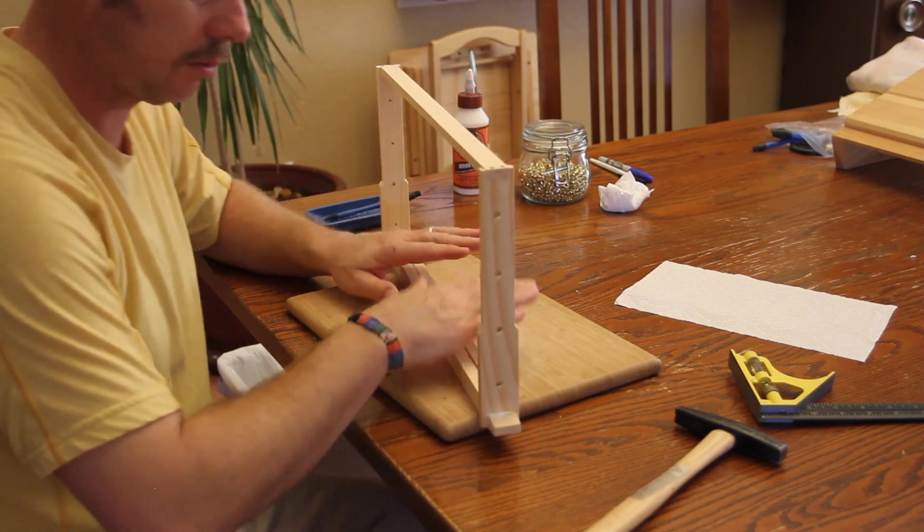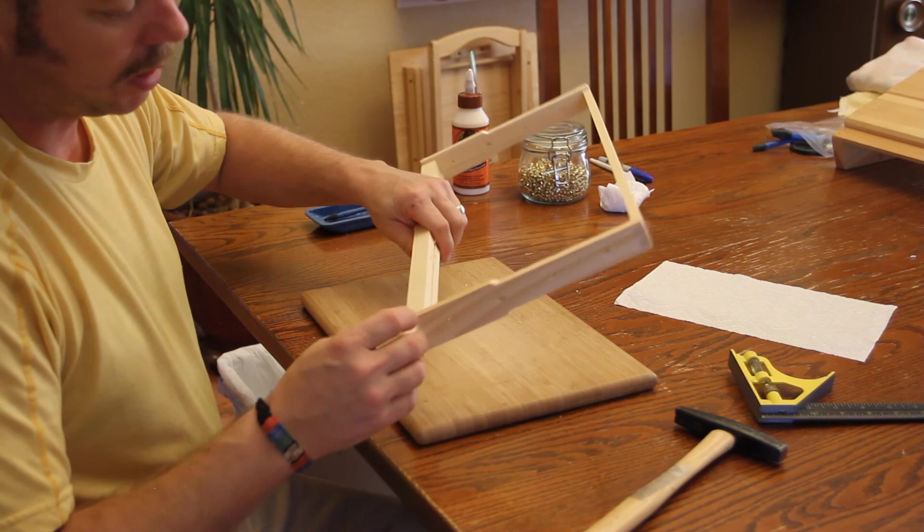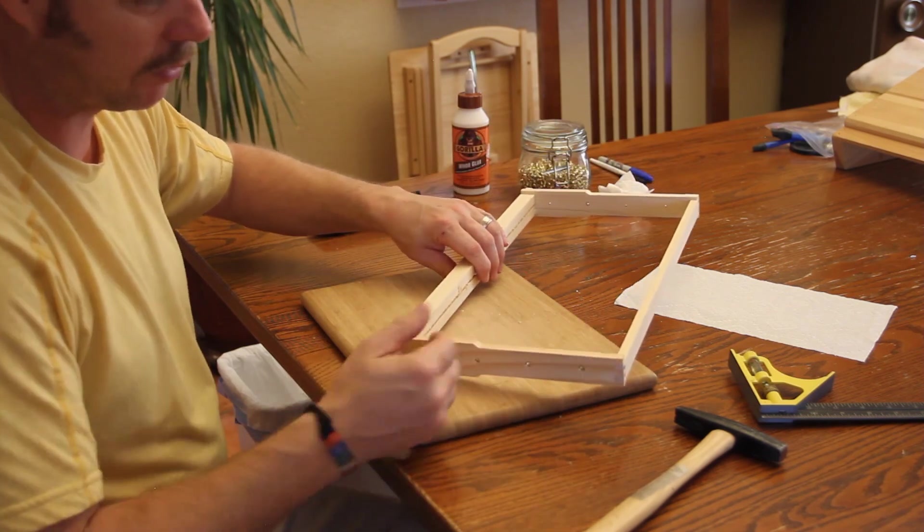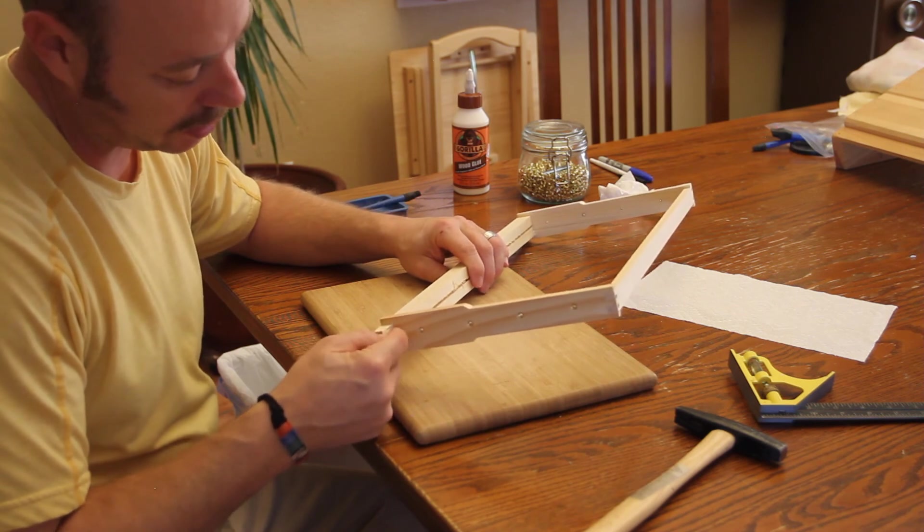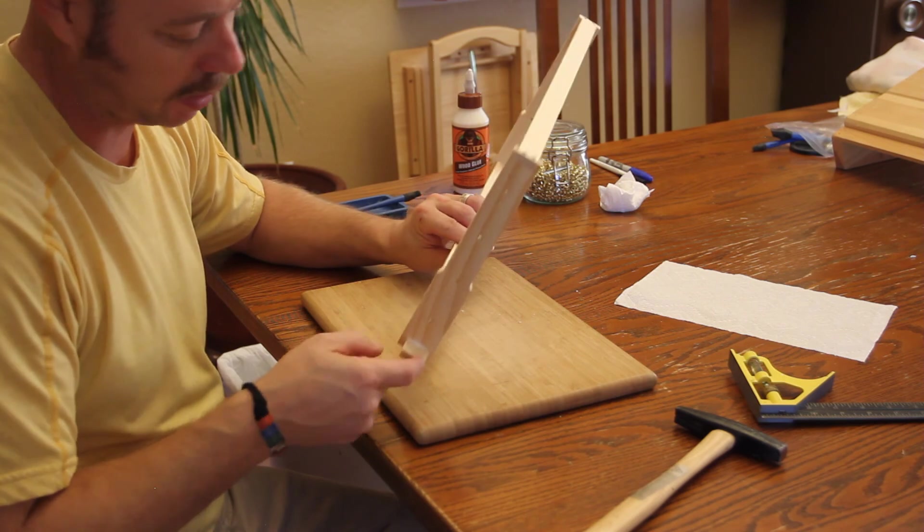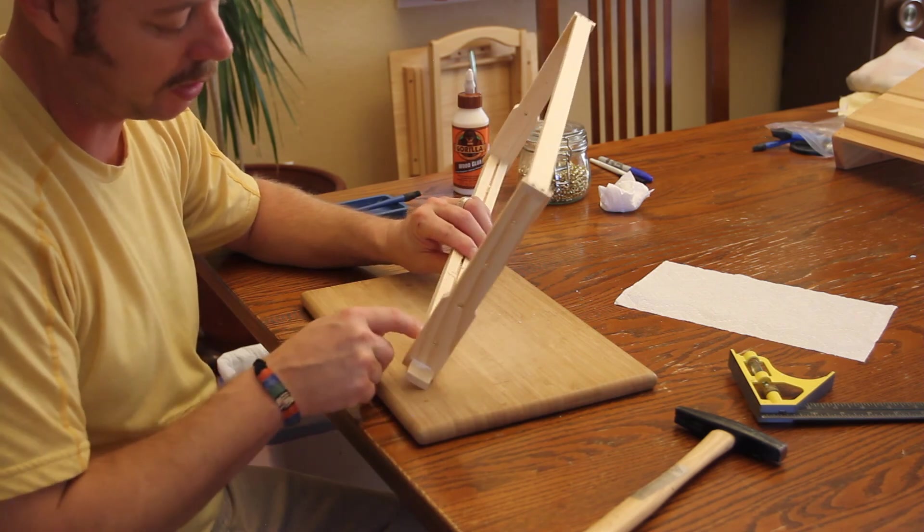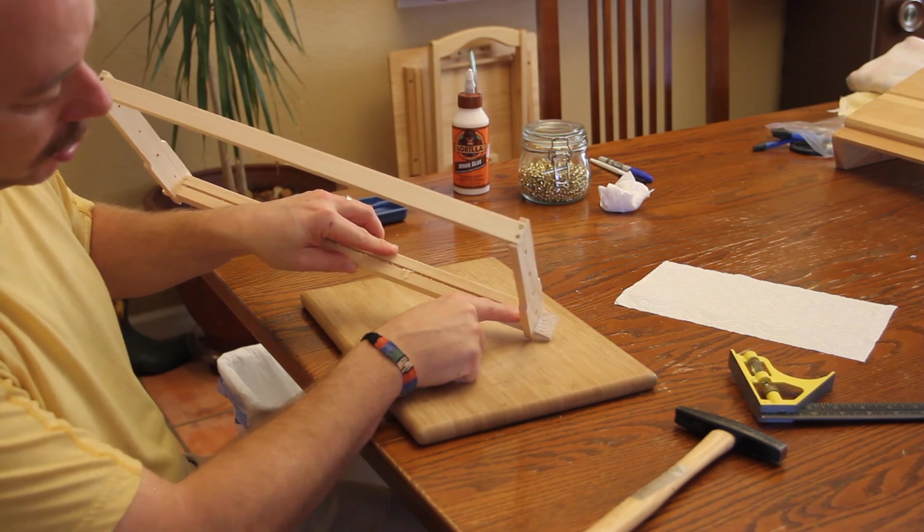Then you're done making your frame. Another thing a lot of people will do—I'm not going to do it because I glue everything with really strong glue—is they'll sink a nail through this end bar into the top bar. You've got to make sure you do it on one side or the other because there's a groove in the top bar and you don't want to put it in there.